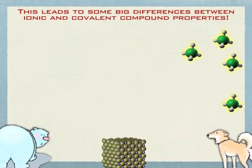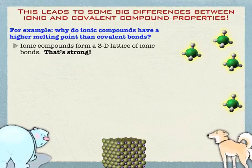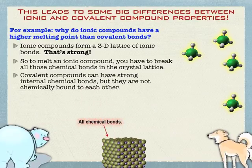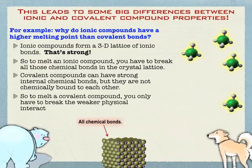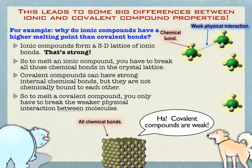So what are some of the big differences this leads to? Ionic compounds have really high melting and boiling points because of their strong 3D lattice. Covalent compounds don't have that. A covalent compound certainly has strong chemical bonds, but the molecules are not chemically bound to each other. To melt an ionic compound you have to overcome chemical bonds — that's all the interactions there are. But with a covalent molecule, you don't have to break a chemical bond; you can break the much weaker physical interaction between molecules. We're going to talk a lot more about these physical interactions — they're called intermolecular forces.